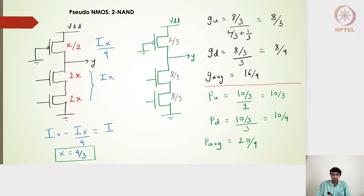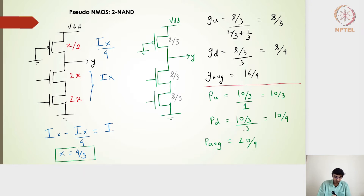In the pseudo-NMOS inverter, the PMOS is always on and connected to VDD, with the input at the NMOS gate and ground at the bottom. On the PMOS side we had a size of 2/3, and on the NMOS side we had a size of 4/3.